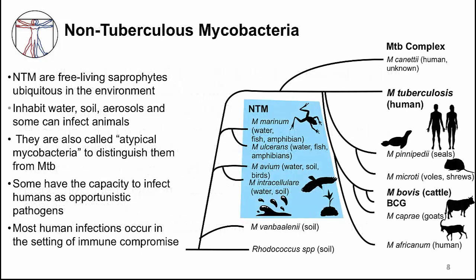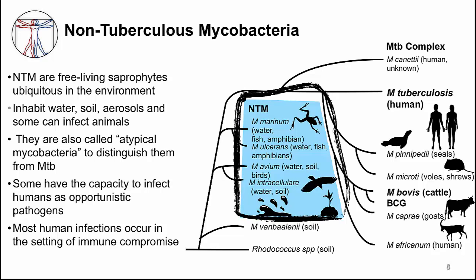Non-tuberculous mycobacteria, or NTMs, are free-living saprophytes. They are ubiquitous in the environment, inhabiting water, soil, and aerosols. Some can infect animals, as you can see in the box. You will sometimes hear them referred to as atypical mycobacteria because they are not typical Mycobacterium tuberculosis. Although NTMs are mostly environmental microbes, some NTMs have the capacity to infect humans as opportunistic pathogens.